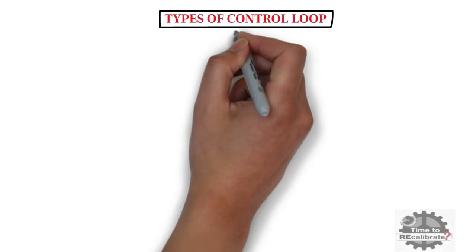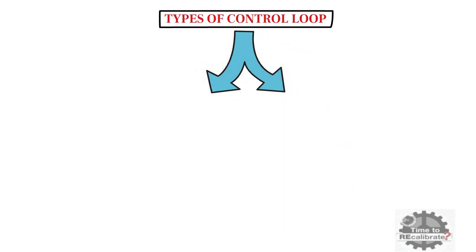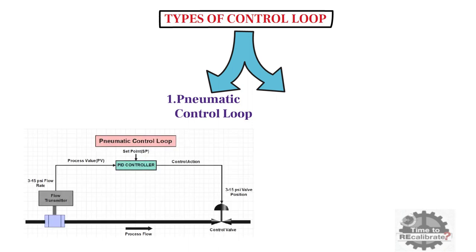Now, let's learn about types of control loop. There are mainly two types of control loop. First type is pneumatic control loop, and second type is electronic control loop.